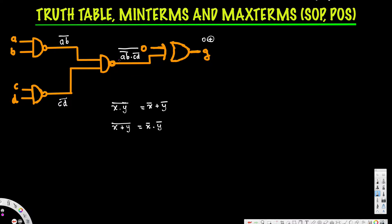We can think of AB̄ as X and CD̄ as Y. These two are ANDed and then all together barred, which matches the first case of De Morgan's: X · Y all barred equals X̄ + Ȳ. So we get AB̄ with a second bar, plus CD̄ with a second bar. Having two bars cancels them out — like negative times negative — so we get AB + CD as our simplified output.